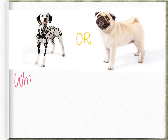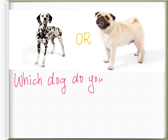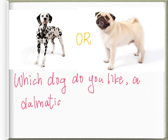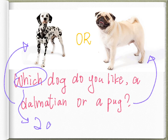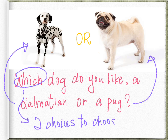I'll give you one more example to explain in more detail. Look at this sentence: which dog do you like — a Dalmatian or a pug? I used 'which' in this question because there are only two dogs to choose from: the Dalmatian or the pug.